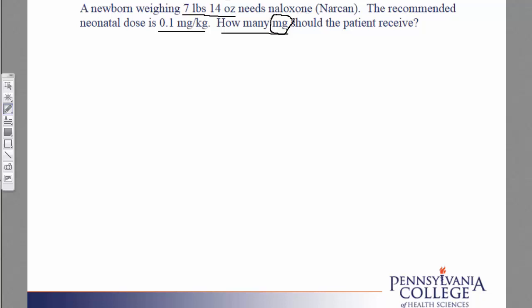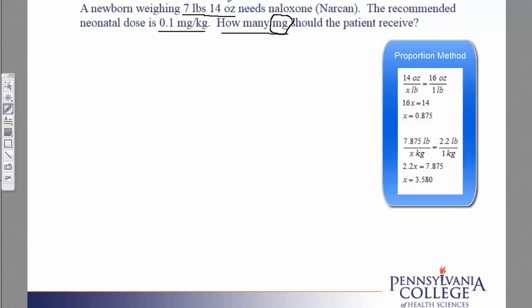We are going to start with the patient's weight. Because it is in pounds and ounces, there are two conversions to do. We'll start with the ounces. Fourteen ounces can be converted over to pounds. We know that there are 16 ounces to one pound.